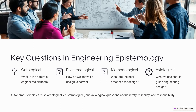Key questions in engineering epistemology: when designing an engineering solution, we must ask ontological questions — what is the nature of engineered artifacts? For example, how do we define an autonomous car — is it a machine or an AI-driven entity? Next is epistemological — how do we know if a design is correct? For example, how can we prove that a bridge can withstand earthquakes? Third is methodological — what are the best practices for engineering design? For example, should we use rapid prototyping or computer simulations? And axiological — what values should guide engineering design? For example, should safety be prioritized over cost in electric vehicle batteries? These questions help engineers balance innovation with responsibility.